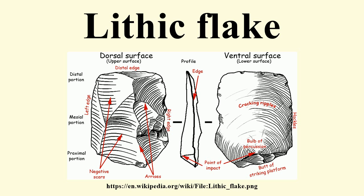Plunging flakes are the result of the force rolling back towards the core and often taking off its bottom. Hinged, step, and plunging terminations, although sometimes deliberately formed, are usually errors called abrupt terminations.